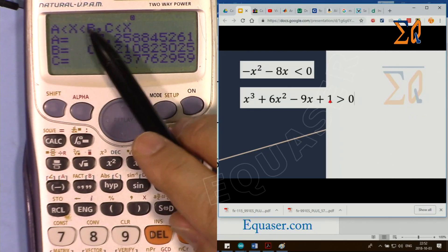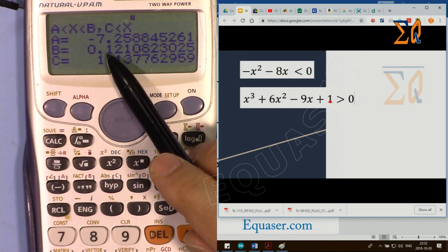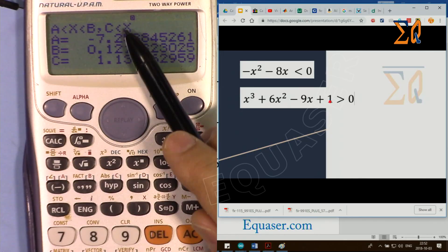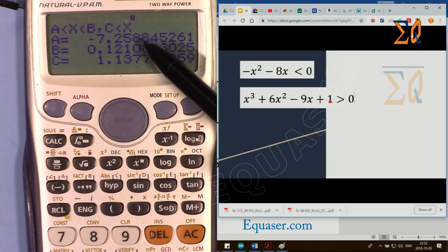Now it says that when x is bigger than a, which is −7.2, and smaller than b, which is 0.12, and also when x is bigger than c, this equation is true.